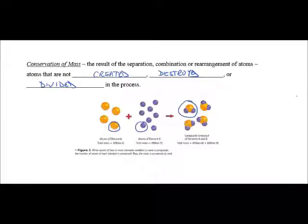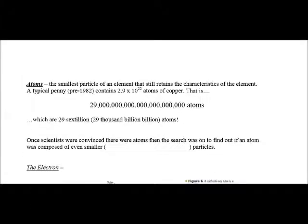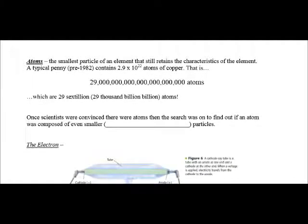Atoms are the smallest particle of an element, and they are unbelievably small. So a typical penny contains 29,000 billion billion atoms, and I don't think we can even imagine what that means.